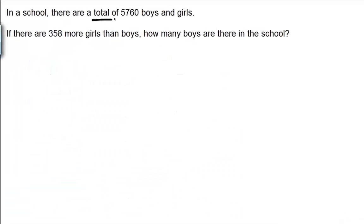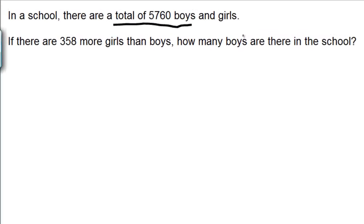In a school, there are a total of 5760 boys and girls. That means that the total number of boys and girls is 5760. Now there are 358 more girls than boys. How many boys are there in the school?